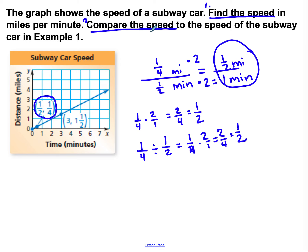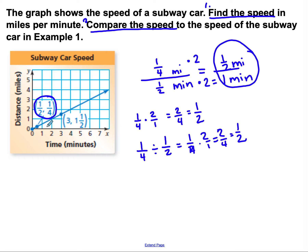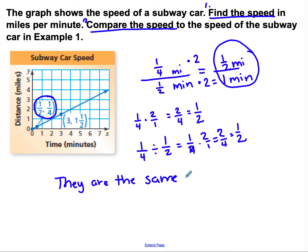Now we need to compare. Going back to Example 1, the speed was 0.5 miles per minute. This graph gives us one half mile per minute. Since 0.5 and one half mean the same thing, they are the same speed. When they ask you to compare something in math, they want you to determine which is bigger or if they are the same — and here they are the same speed.